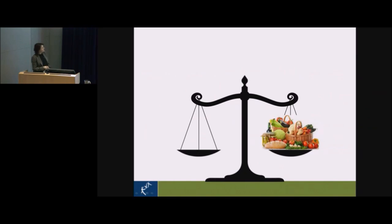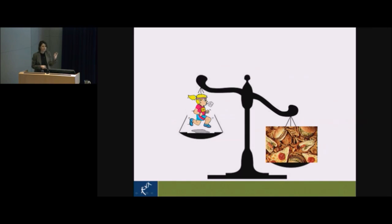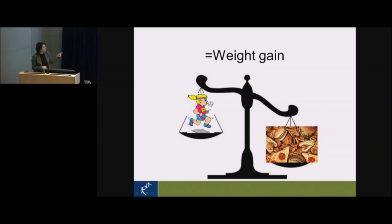It's pretty simple: if what we eat equals what we expend, we maintain our weight, and some of us are very good at that, maintaining the same weight year over year. When we age we don't burn as much. When what we eat outweighs what we expend, we get weight gain.